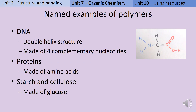Unit 7 also includes a number of different examples of naturally occurring polymers. These include DNA, where you should know that it has a double helix structure and that the monomers that make it up are four complementary nucleotides; proteins made from amino acids, like glycine, where you should be aware of the two different functional groups — the carboxylic acid group and the amine group; and also starch and cellulose, which are both made out of glucose.